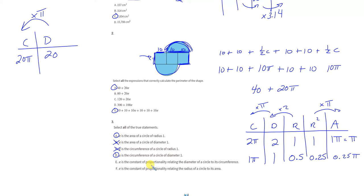Pi is the constant of proportionality that relates diameter of a circle to circumference. Diameter to circumference, my constant is pi. Oh yeah, that's true. We've been using that a lot.